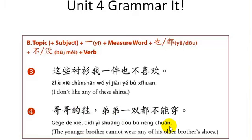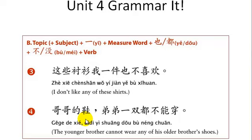This is where Chinese grammar gets a little funky. You introduce the topic first — 哥哥的鞋, so we're talking about older brother's shoes. Then: 弟弟一双都不能穿 — little brother can't even wear one pair, can't wear any of them.